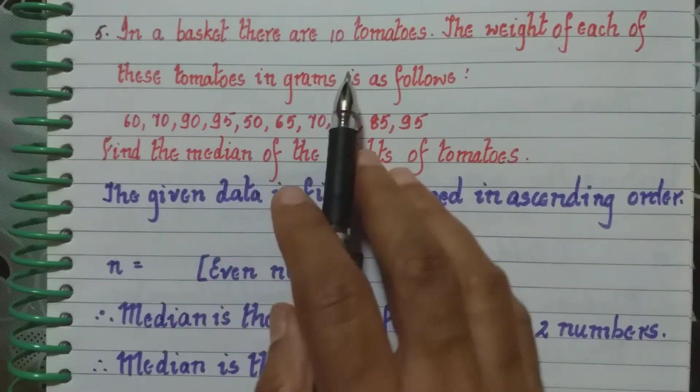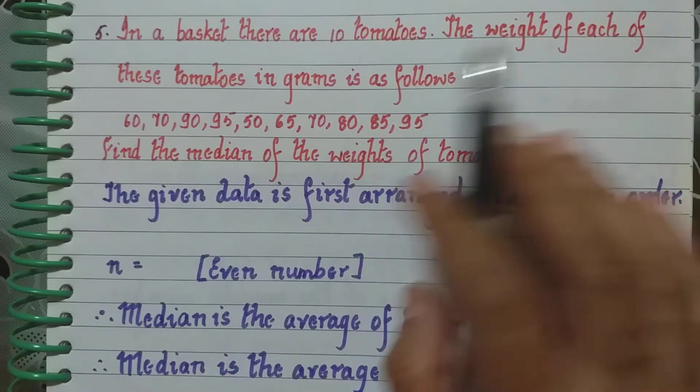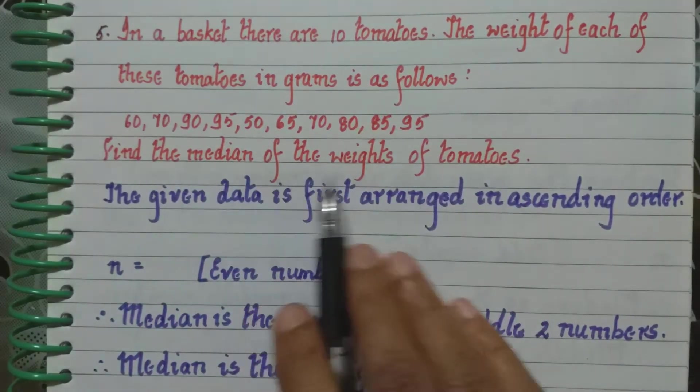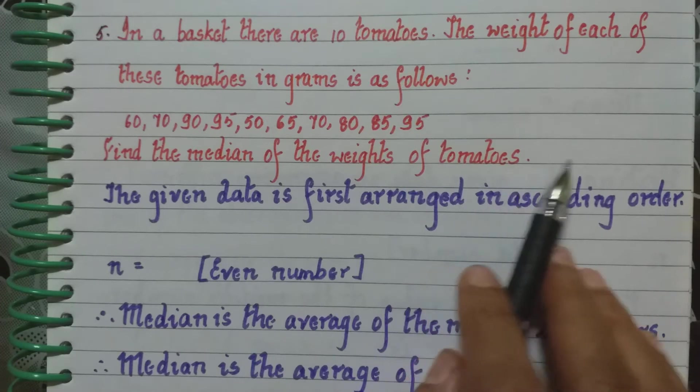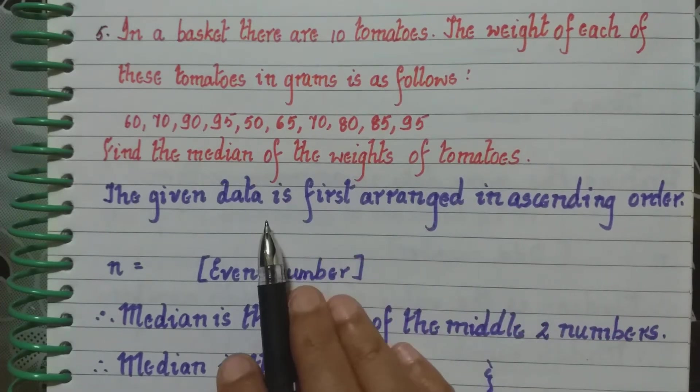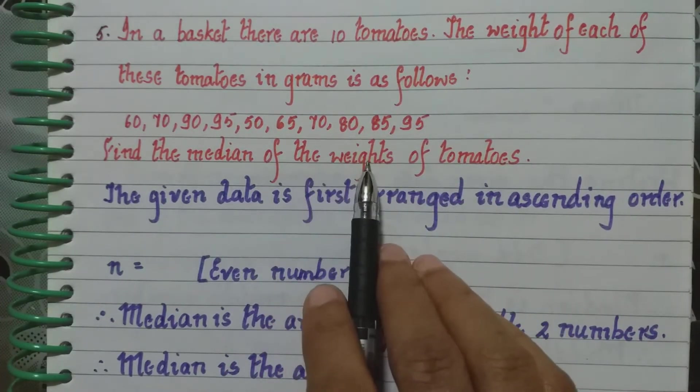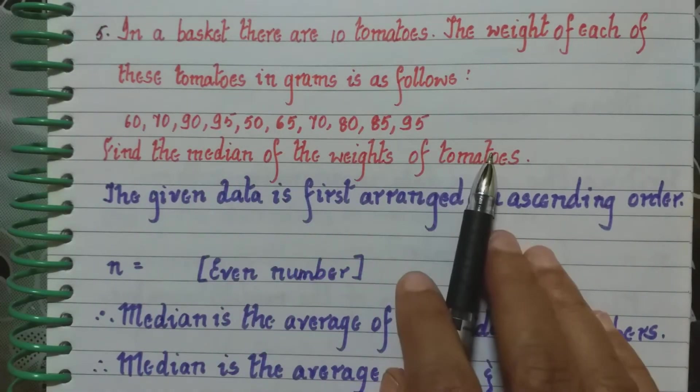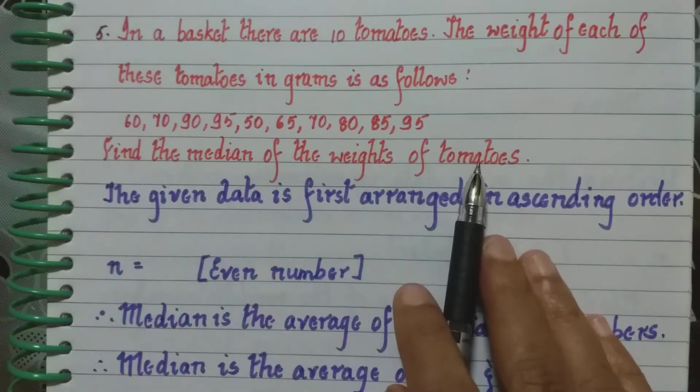Fifth question. In a basket there are 10 tomatoes. The weight of each of these tomatoes in grams is as follows. Find the median of the weights of the tomatoes. So we have to find the median and median means we have to arrange these numbers in the ascending order. So we arrange it first now in the ascending order.